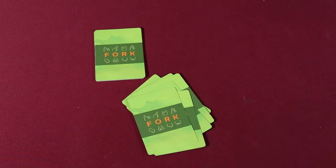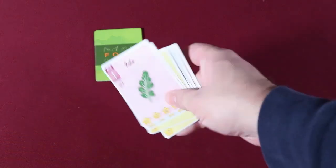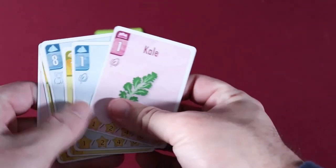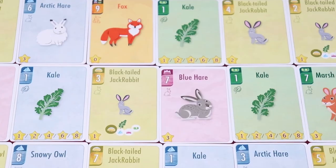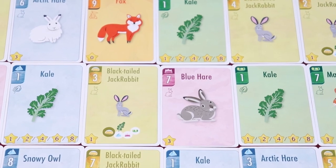The youngest player is the starting player. When playing multiple games, the player who scored the lowest in the previous game becomes the start player for the new game. The object of Fork is to score the most points. Points are scored by winning cards in rounds or tricks.